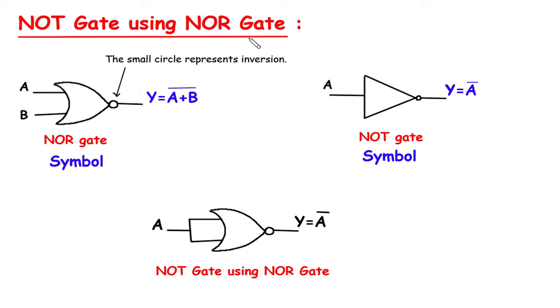NOT gate using NOR gate. Here we can see this is the symbol for NOR gate. It has two inputs A and B and one output Y. The small circle represents inversion.